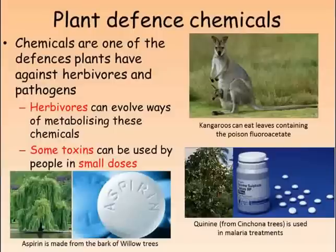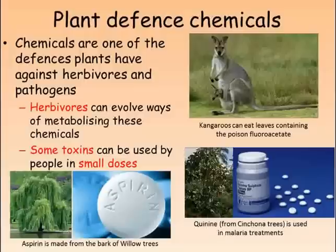Another example of plant-animal co-evolution is how herbivores and plants have evolved together. Plants have evolved a range of strategies to prevent herbivores feeding on them, including thorns, growing tall, and also producing toxins that affect the animals. Animals may then evolve ways of metabolizing these chemicals so that they're not affected by them. Kangaroos, for example, have evolved the enzymes needed to break down the poison produced by several different plants native to Australia, giving them a huge advantage over other herbivores living in the area.